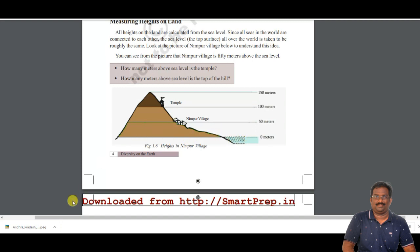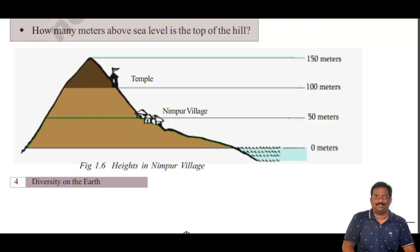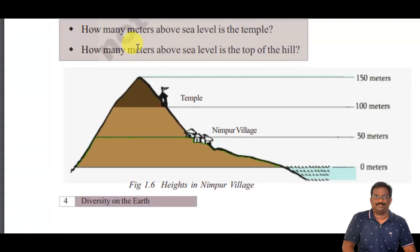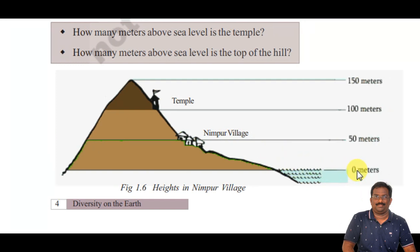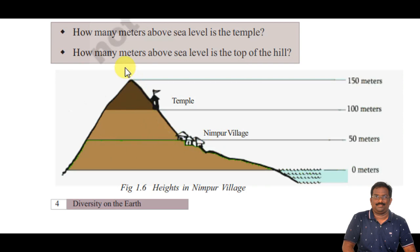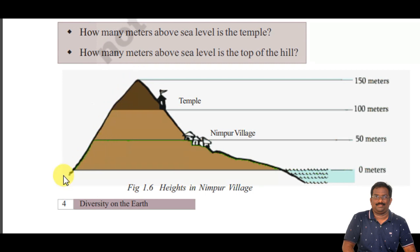Let us discuss mean sea level. If you see this map of Nimbur village, and you want to measure the height of the mountain, you have to measure from zero meters. Zero meters is the basic level of the water, known as mean sea level or MSL. We measure from here upwards. On land, we have an undulating surface — mountains and deep depressions and valleys.